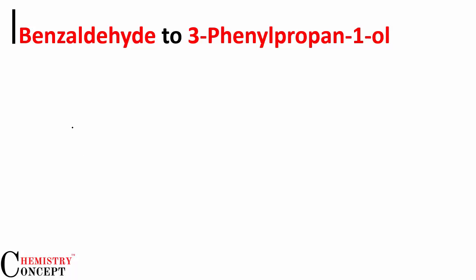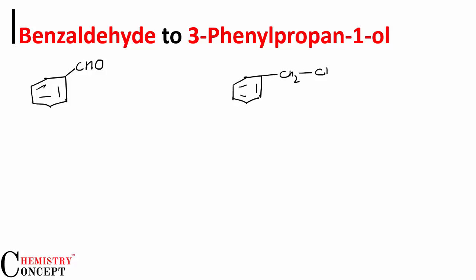We need to convert benzaldehyde to 3-phenylpropane-1-ol. First of all, let's draw the structure of the reactant and product. Benzene with CHO is benzaldehyde. 3-phenylpropane-1-ol looks like this: CH2 CH2 CH2 OH attached to the benzene ring.